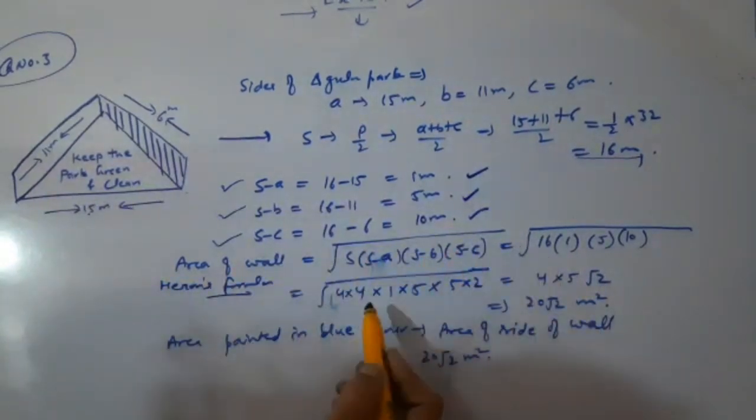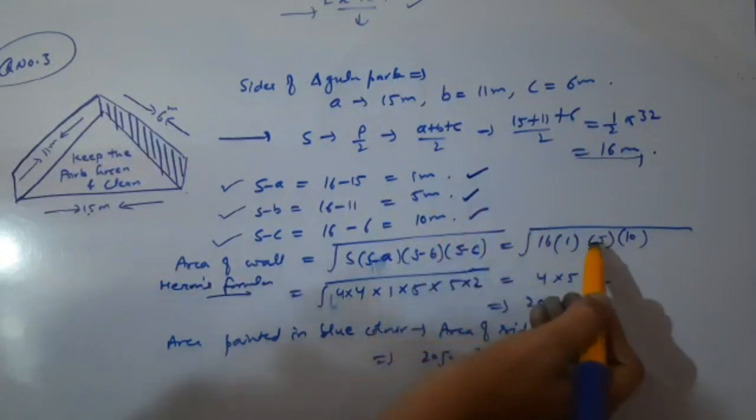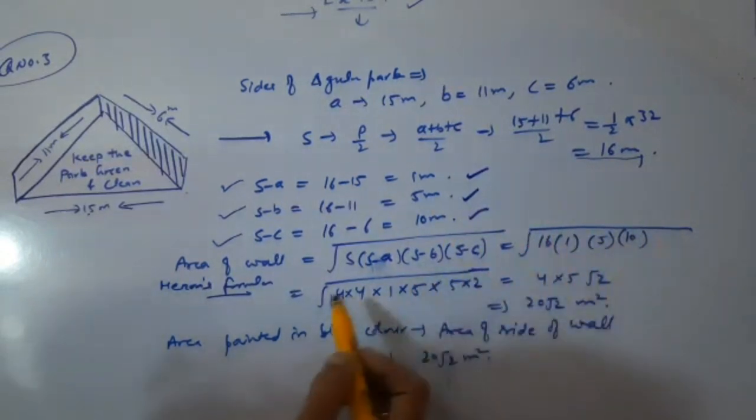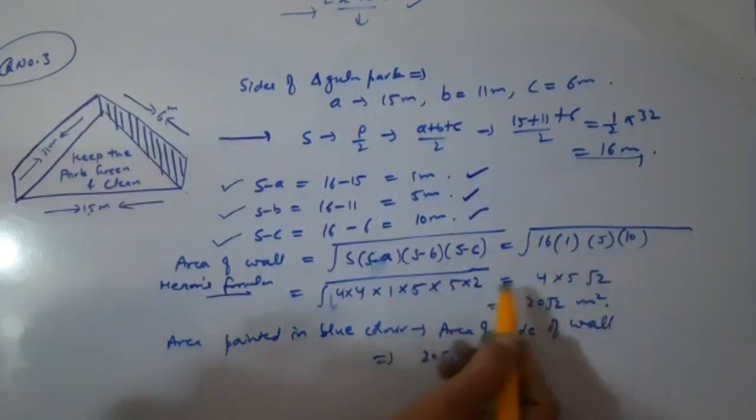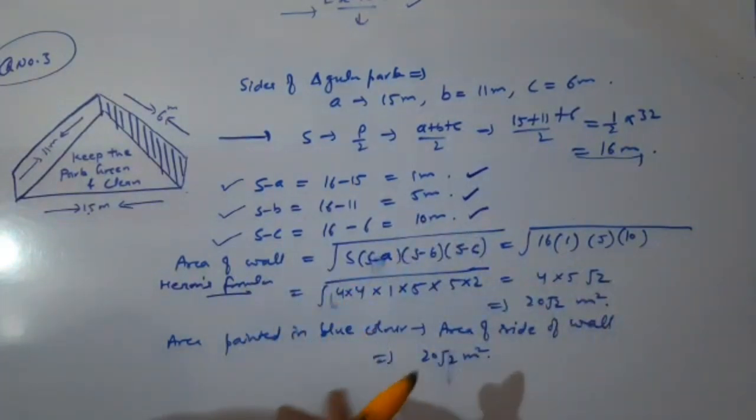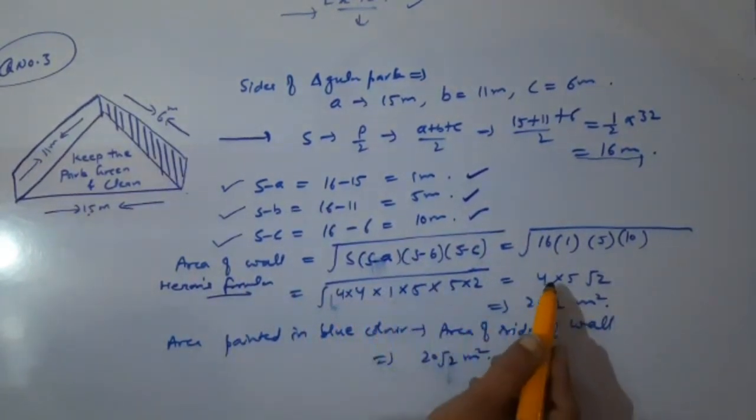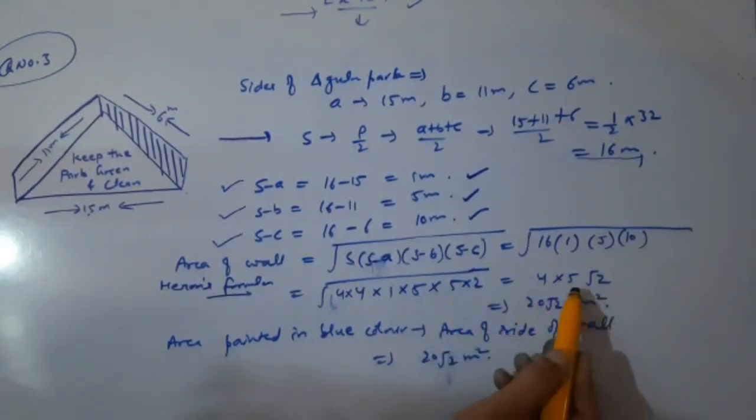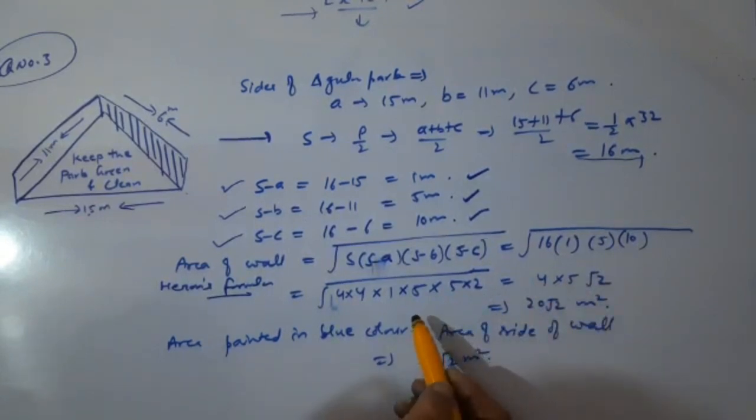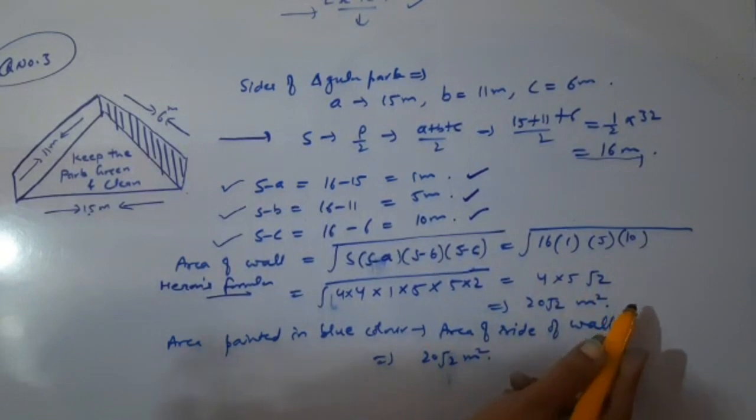Now you have to put all the values in the Heron's formula. S was 16, then into 1, into 5, into 10. Now break these values: 16 as 4 × 4, then 1, then 5, and 10 as 5 × 2. 4 two times, so it is coming out once. 5 two times, so 5 came out. Inside remains root 2. So what is the area? Area is 20 root 2 meter square.